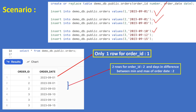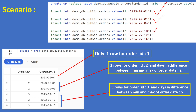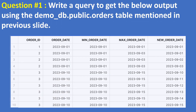After inserting, a SELECT * from demodb.public.orders shows one row for order_id 1, two rows for order_id 2 with a two-day difference between min and max order_date, and three rows for order_id 3 with a five-day difference between min and max order_date. The question is: write a query to get the expected output using this table.